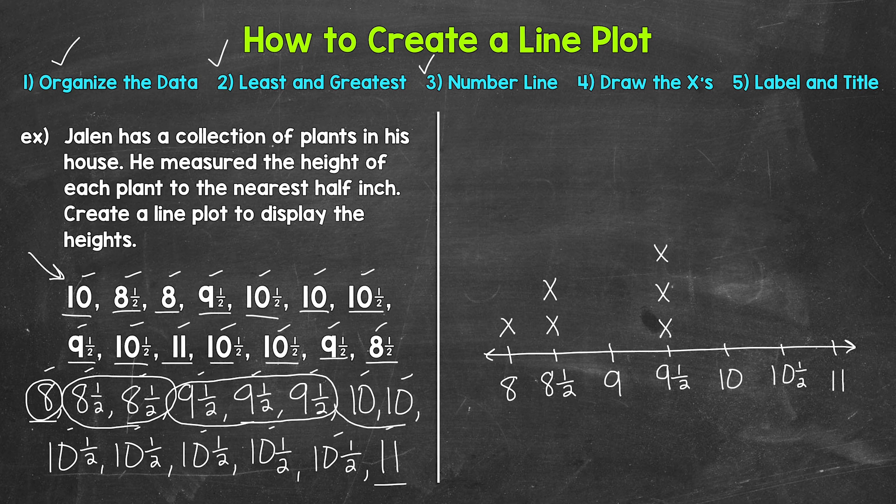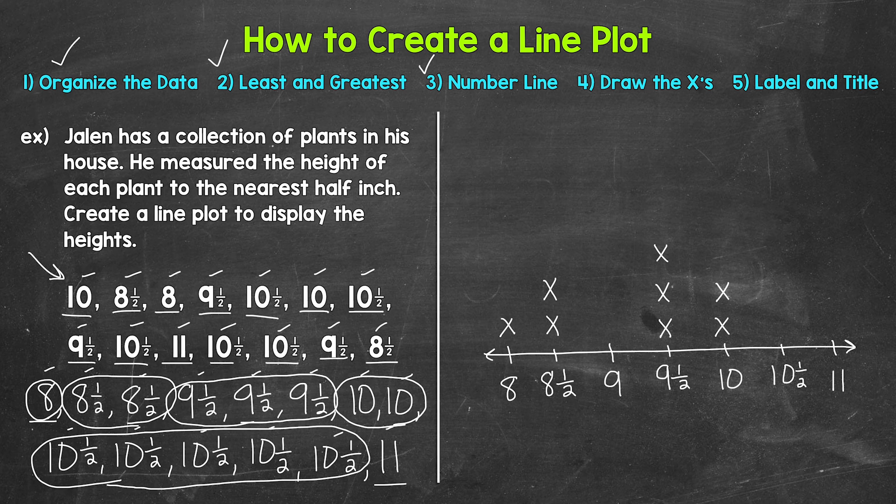Next, we have 10. There were 2 plants that were 10 inches tall. Next, we have 10 and a half. We have 5 plants that were 10 and a half inches tall. So we need 5 x's. And then lastly, we have 11 inches. There was 1 plant that was 11 inches tall. So we need 1 x above 11.